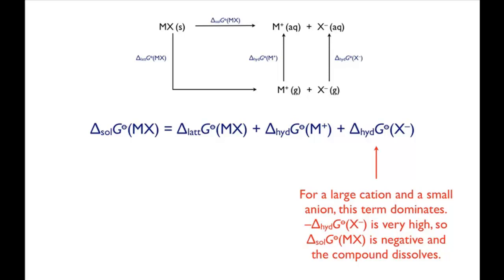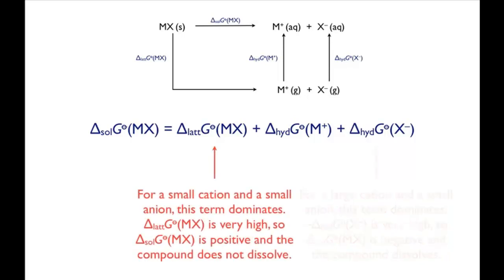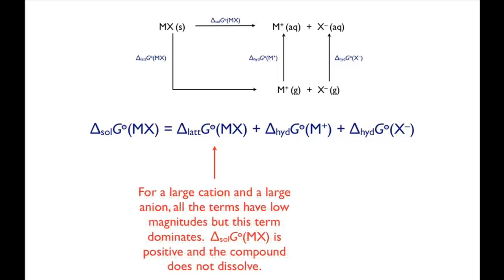Compounds with small cations and small anions tend to be insoluble. In these cases, the combination of two small ions makes the lattice energy very high. Although the hydration energies are also high, they're not large enough to outweigh the very high lattice Gibbs energy, and as a result the compound is insoluble. Compounds with large cations and large anions also tend to be insoluble. In this case, all the energy terms are relatively low, and the lattice Gibbs energy tends to dominate. When this is the largest term, the compound is insoluble.